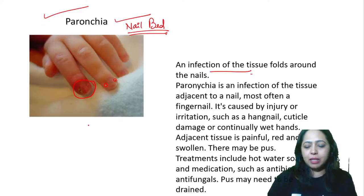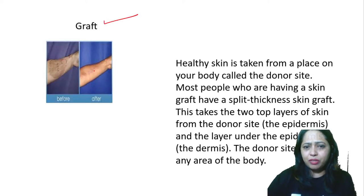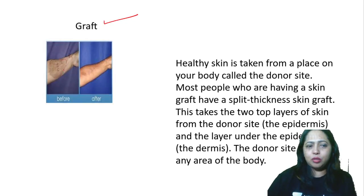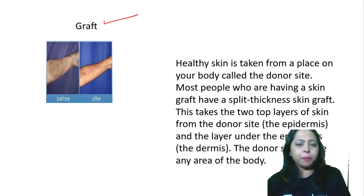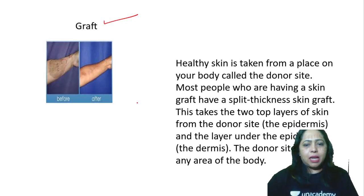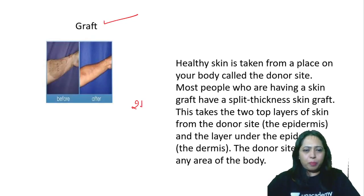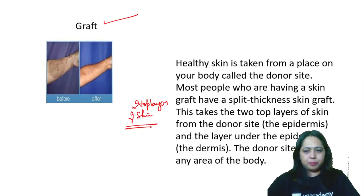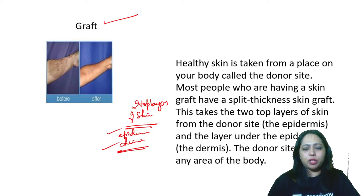Skin graft — you can see before and after how it looks. It could be from the same person donating from one part of the body to another, or from a completely different donor. The donor site can be any area of the body. What is taken? Usually the two top layers of the skin — the epidermis and dermis — are taken.